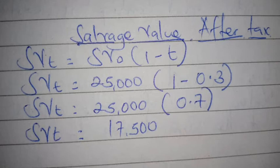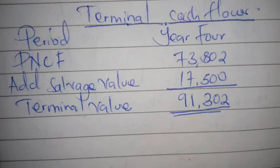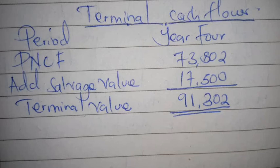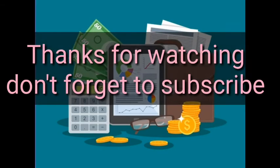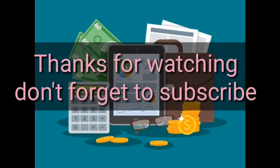Now we determine the terminal cash flows. Terminal cash flows are for the last year, so we go to year four, which was the last year. From our previous video on intermediate cash flows, the periodic net cash flows for the last year were seventy-three thousand eight hundred and two dollars. We then add the salvage value after tax of seventeen thousand five hundred, giving a total terminal cash flow of ninety-one thousand three hundred and two dollars.